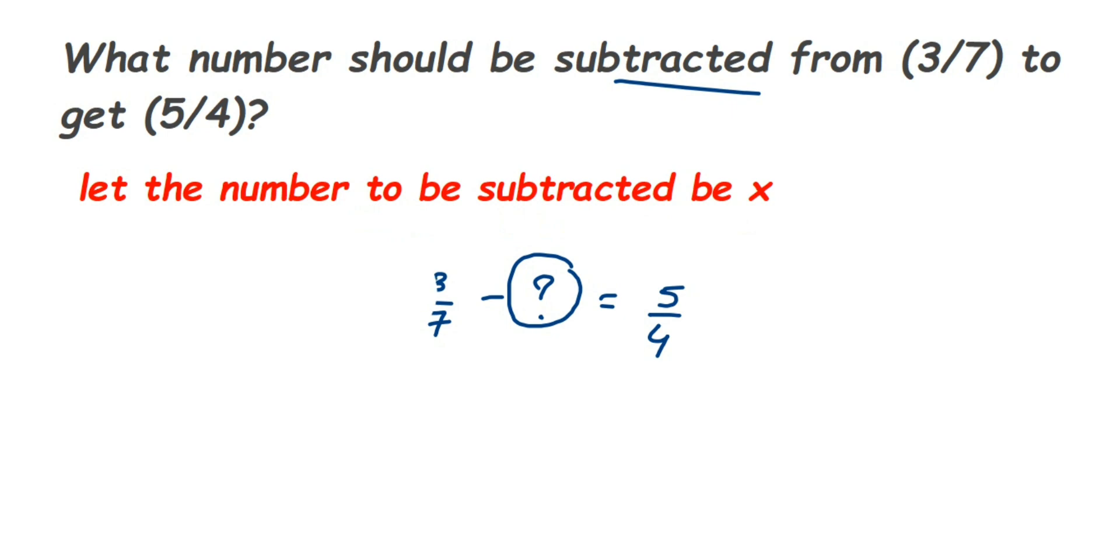When you frame it, from 3/7 what we should subtract, that number to be subtracted I've taken as x, so minus x will be equal to the answer which is 5/4. Now it's like a linear equation, so you have to find the value of x.